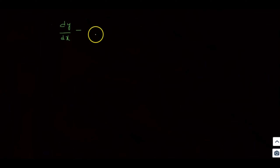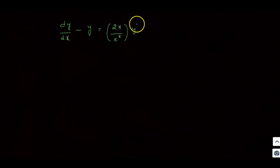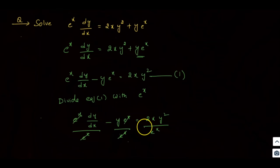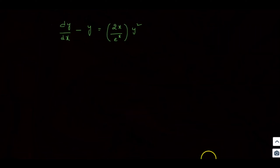This gives us: dy/dx minus y is equal to 2x by e^x into y². So the right-hand side is 2x/e^x · y², with 2x in the numerator and e^x in the denominator.